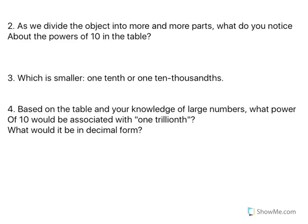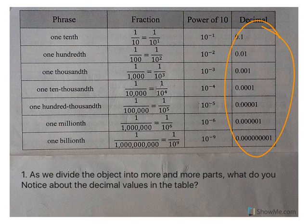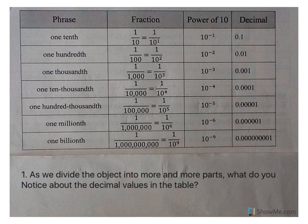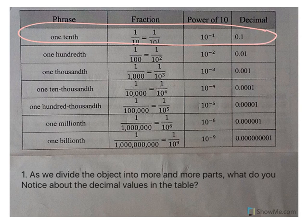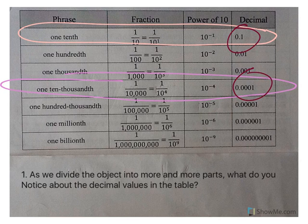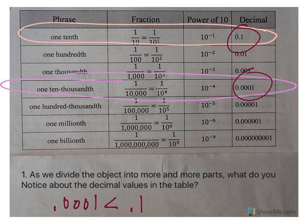Now, in number 3, which is smaller, 1 tenth or 1 ten thousandths? Well, let's look at those two numbers. So we have 1 tenth is here, and then 1 ten thousandths is here. Now, if you compare them by decimal, you can see that 0.0001 is less than 0.1, smaller. So therefore, 1 ten thousandths would be smaller than 1 tenths. And that's kind of the easiest way to look at it.